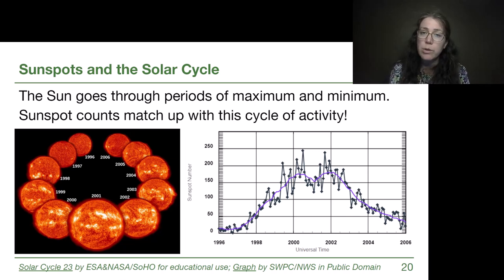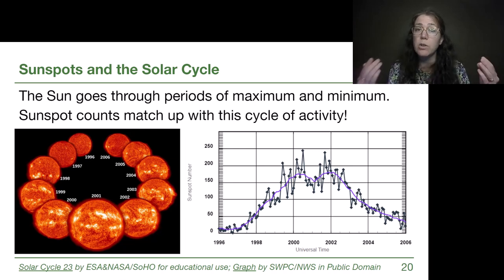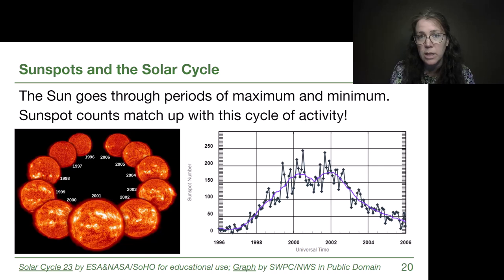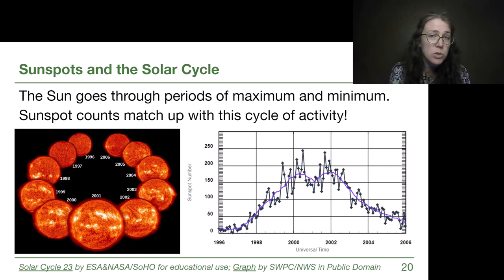One of the things we want to remember from the previous video is that sunspots in the photosphere correspond with active regions in the solar corona. So when we have a lot of sunspots, it means we also have a lot of active regions.